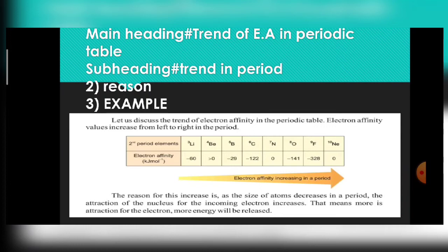For example, fluorine has the highest electron affinity value because it requires only one electron and is an electronegative non-metal. It requires only one electron to complete its octet. When it completes its octet by gaining an electron, it becomes stable. We know that stable atoms have less energy compared to unstable ones, so when they become stable they release energy. The first reason is nuclear attraction for the incoming electron, and the second is stability.